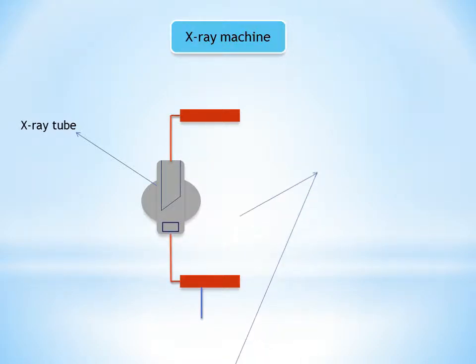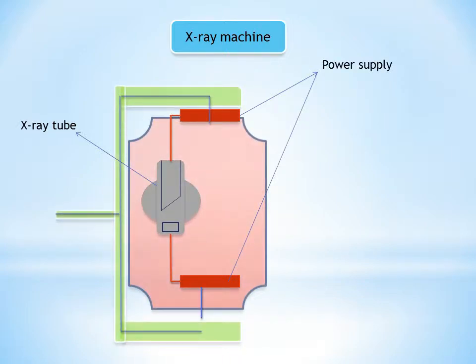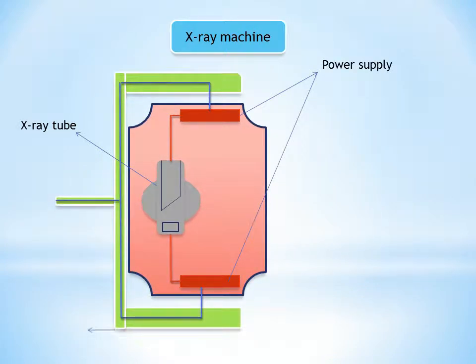The primary functions of the power supply of an X-ray machine are to provide a low voltage current to heat the X-ray tube filament and generate a high potential difference between the anode and cathode.